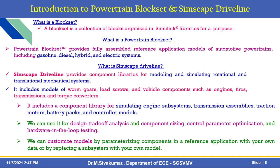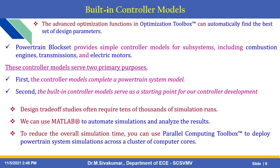You can customize a model by parametrizing components in the reference application with your own data or by replacing a subsystem with your own model. The advanced optimization function in the Optimization Toolbox can automatically find the best set of design parameters. Powertrain Blockset provides simple controller models for subsystems including combustion engines, transmission, and electric motors. These built-in controllers serve two primary purposes: completing a powertrain system model, and serving as a starting point for controller development.